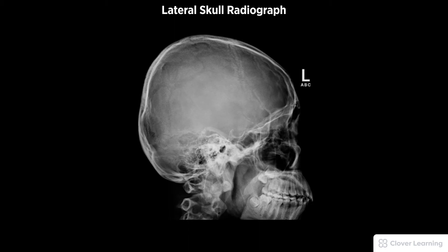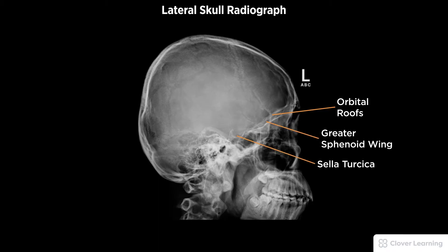A diagnostic lateral skull radiograph must be free of motion and rotation. Demonstrated anatomy includes superimposed orbital roofs and the greater wings of the sphenoid, the sella turcica in profile, with proper visualization of soft tissue and bony detail.